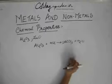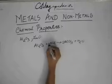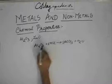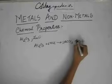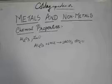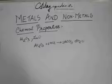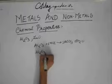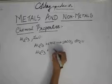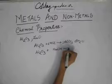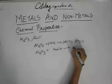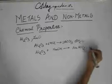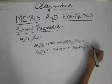Al₂O₃ gives salt and H₂O is water. Balancing the equation, the coefficients are 6, 3, 3, 3. So they give salt and water, which means they are behaving as basic oxides. But don't jump to this conclusion. We have another reaction of Al₂O₃.